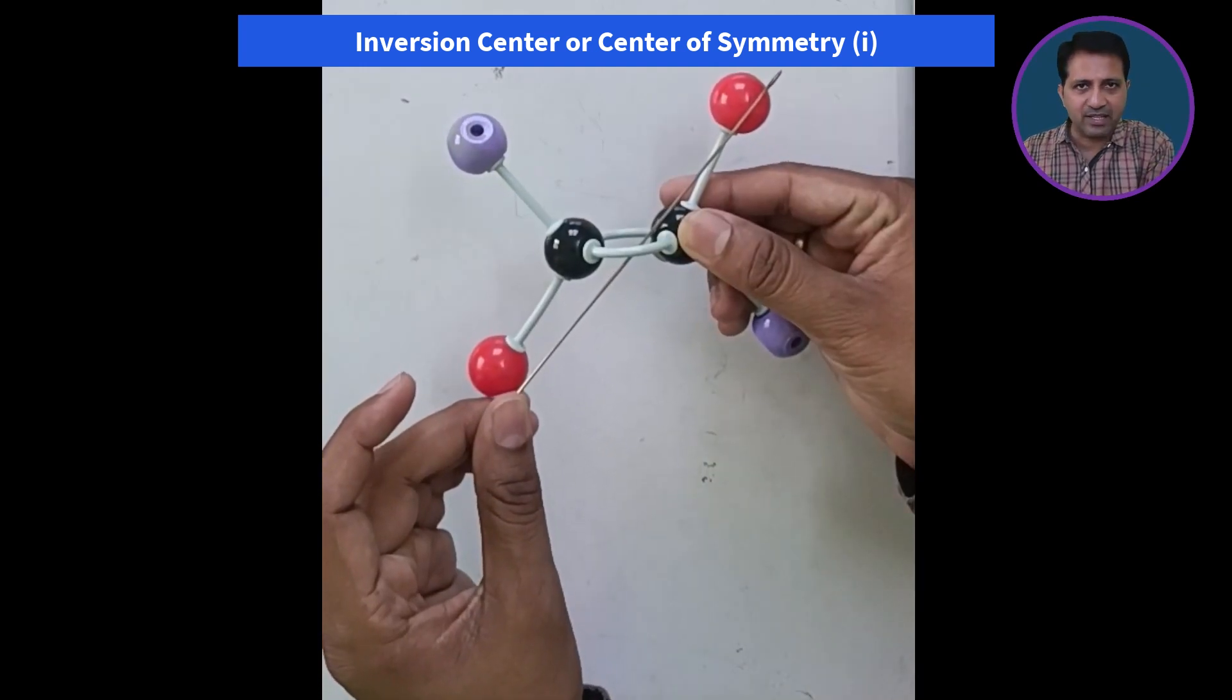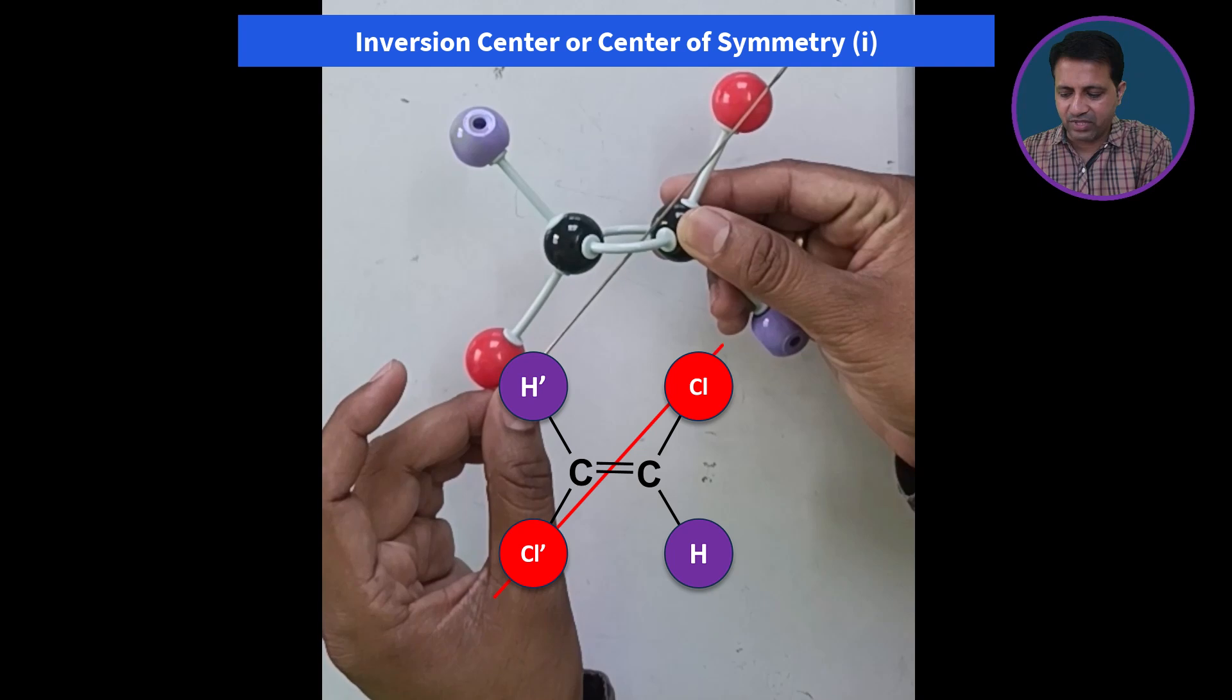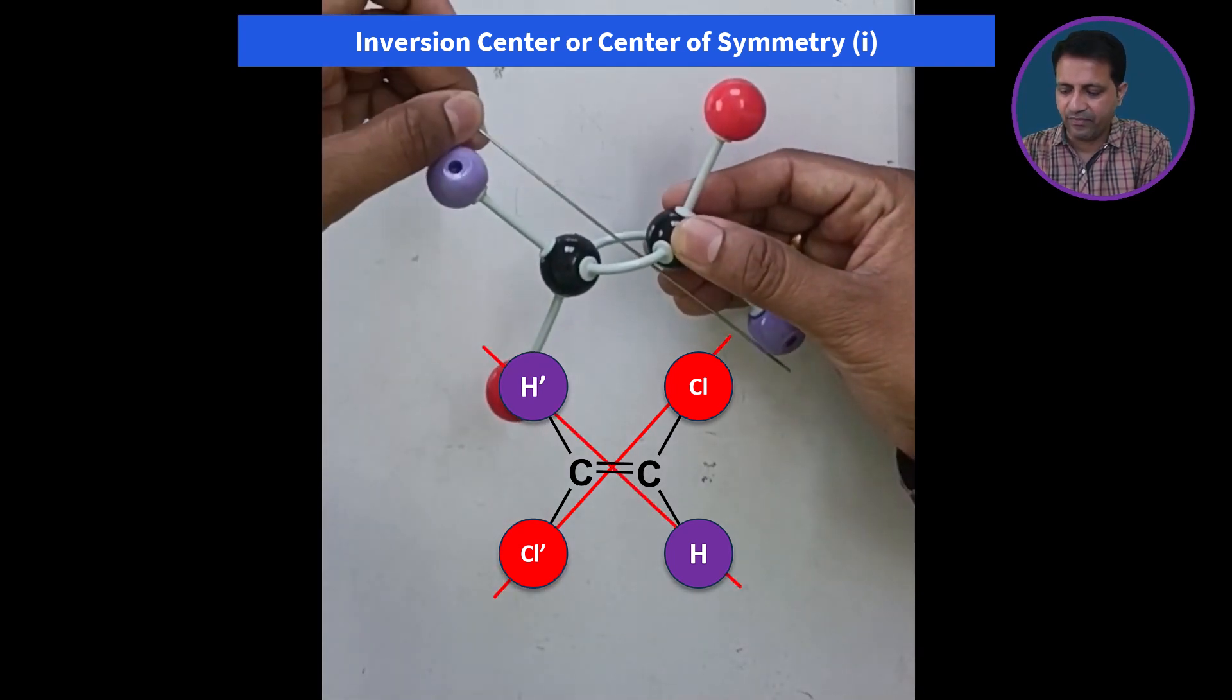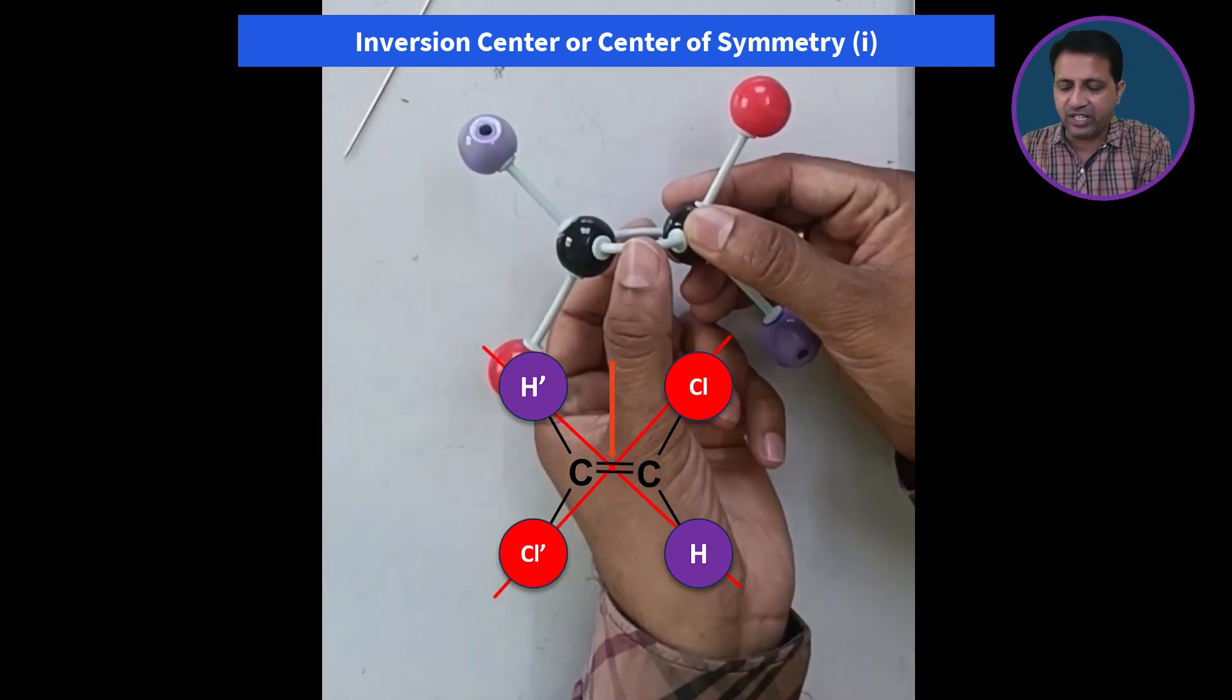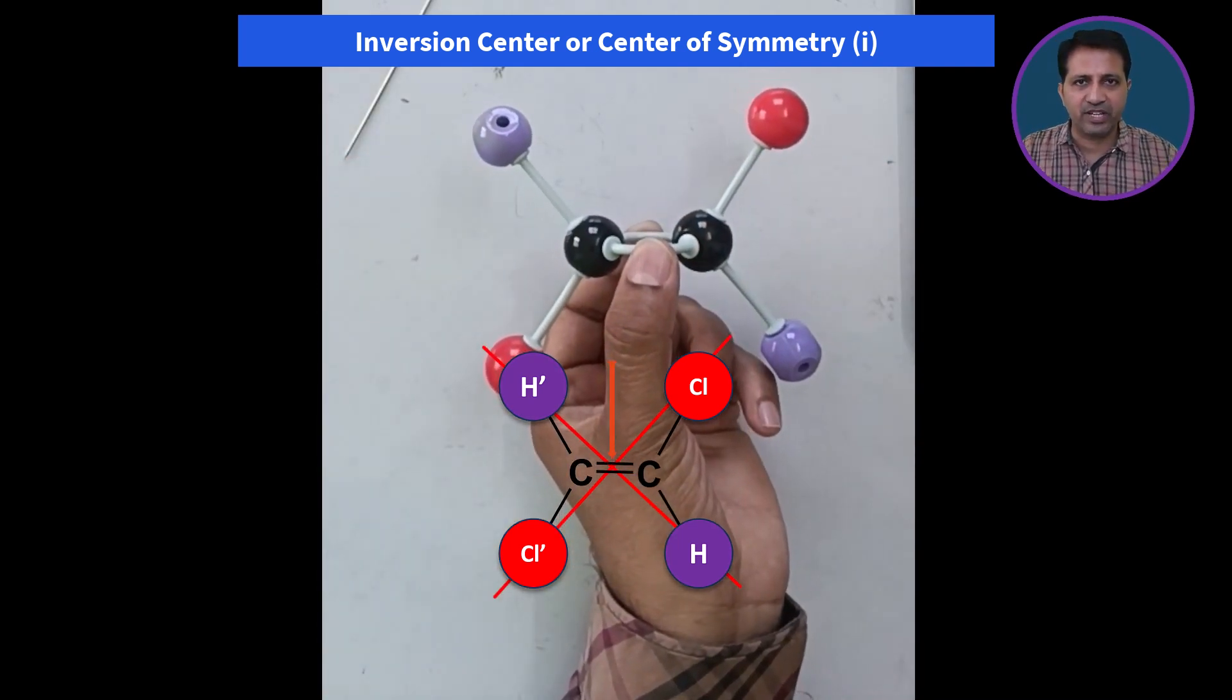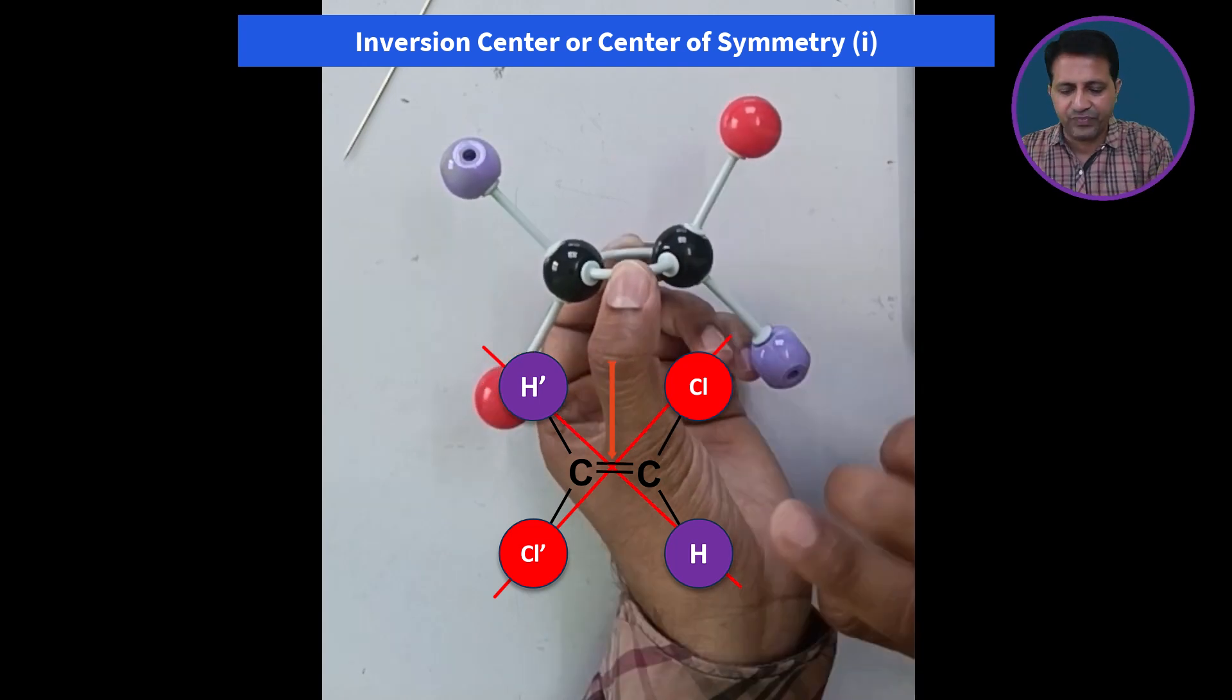If we pass a line in between these two atoms and these two atoms, it meets at this one point and that point is called as center of symmetry or center of inversion.